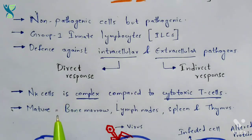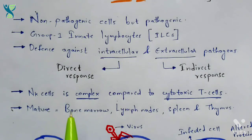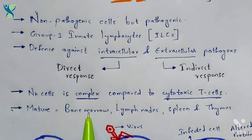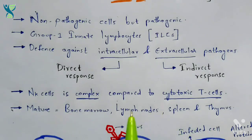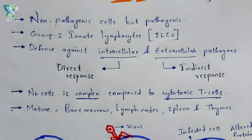You should also know how natural killer cells get matured and where they mature. They mature in certain regions of the body: the bone marrow, lymph nodes, spleen, and thymus. In these regions, the natural killer cells get activated and matured to kill pathogens that enter the body or to kill infected cells that develop within the body.